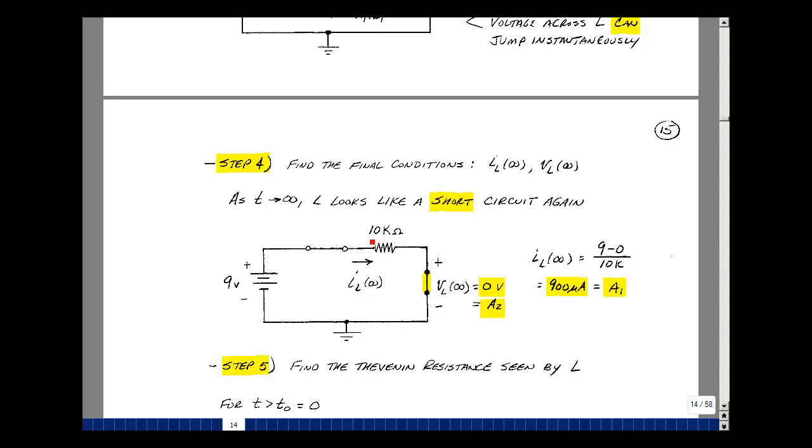The inductance becomes a short circuit again, and now the current that flows is going to be the current that flows to this resistance, which is this node voltage, which is 9, minus this node voltage, which is 0 because the inductance looks like a short circuit. So I've got 900 microamps. Voltage across here is 0 because it's a short circuit.